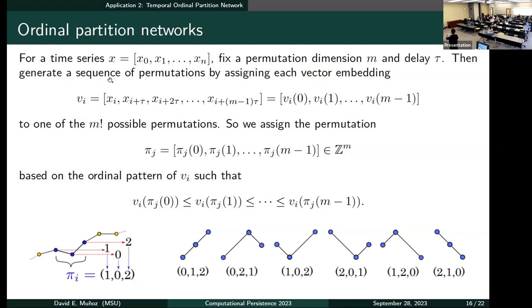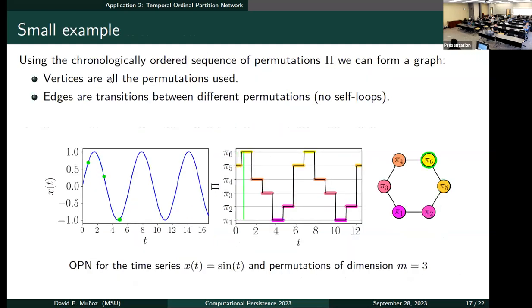But now we take a different turn here and we use each of these vectors, we assign them to a permutation of M elements. So here we have in the bottom the example, which is much more clear. When we have dimension three, we have three points for each vector embedding, and then depending on the values of these three points, we assign this vector to one of the permutations. In this case, we have six possible permutations.